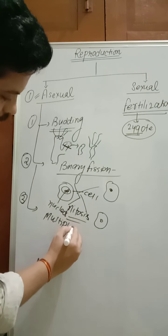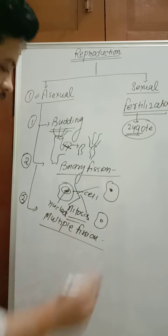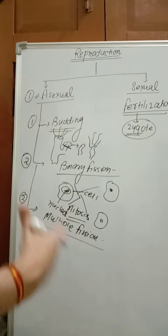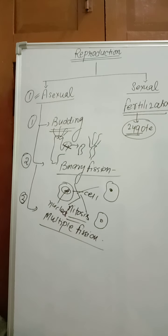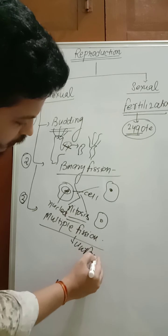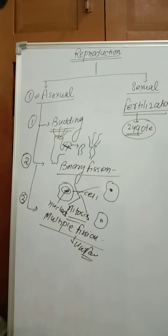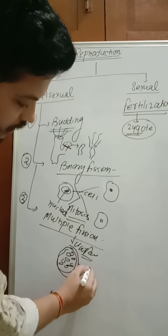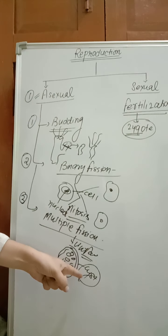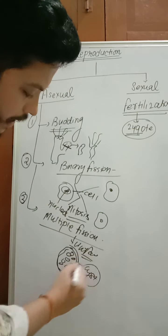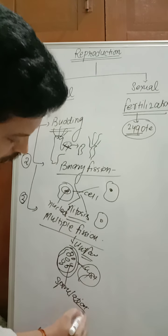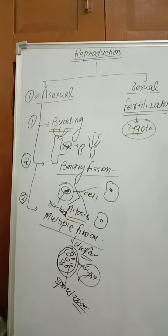The next type is multiple fission. Unlike binary fission which produces two daughter cells, in multiple fission the parent cell is divided into many cells — multiple divisions take place. This process takes place in unfavorable conditions and forms many tiny spores. In amoeba, a hard covering forms over the spores called a cyst. During favorable conditions, the cyst breaks out and releases a large number of tiny amoeba. That is called sporulation. This also takes place in parasites like plasmodium.